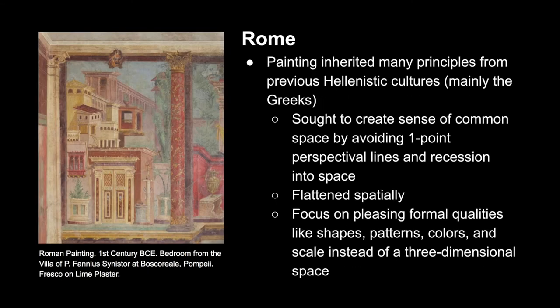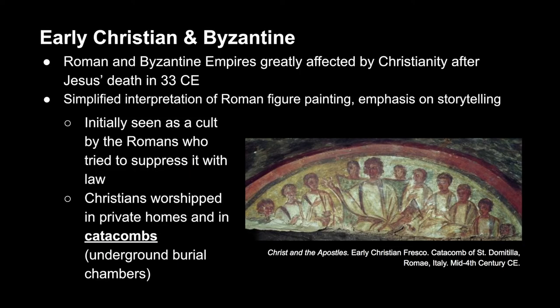As for Roman painting, it inherited many principles from the previous Hellenistic cultures, mainly from the Greeks. It sought to create a sense of common space by avoiding one-point perspective altogether — so there are no perspectival lines and no receding back into space. It's very flattened spatially, with a focus on pleasing formal qualities like shapes, patterns, colors, and scale, instead of trying to create an illusionistic three-dimensional pictorial space.